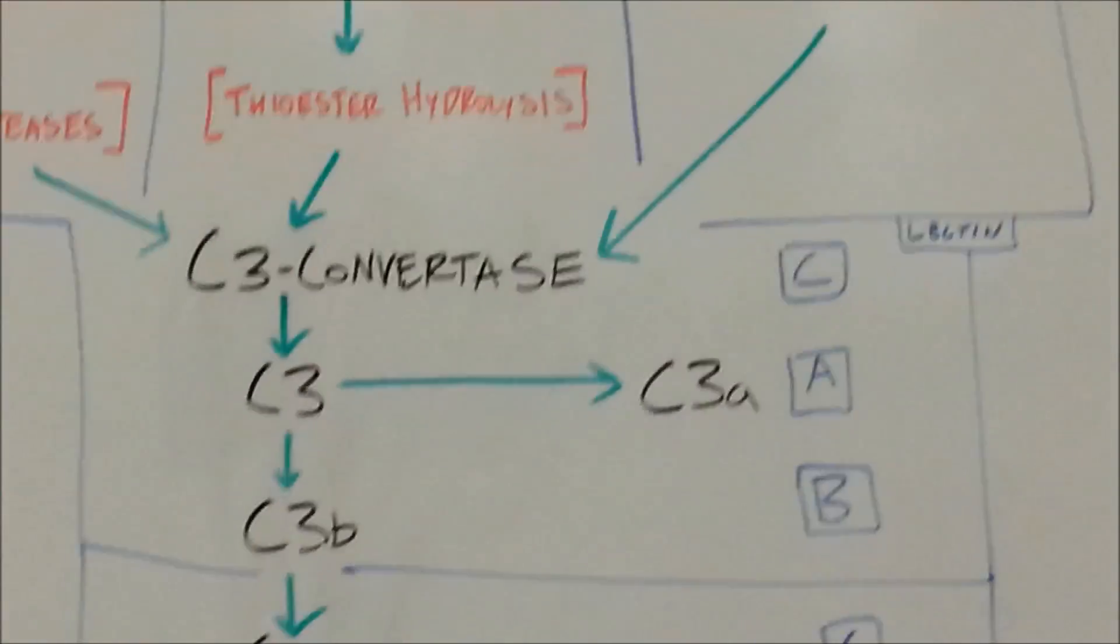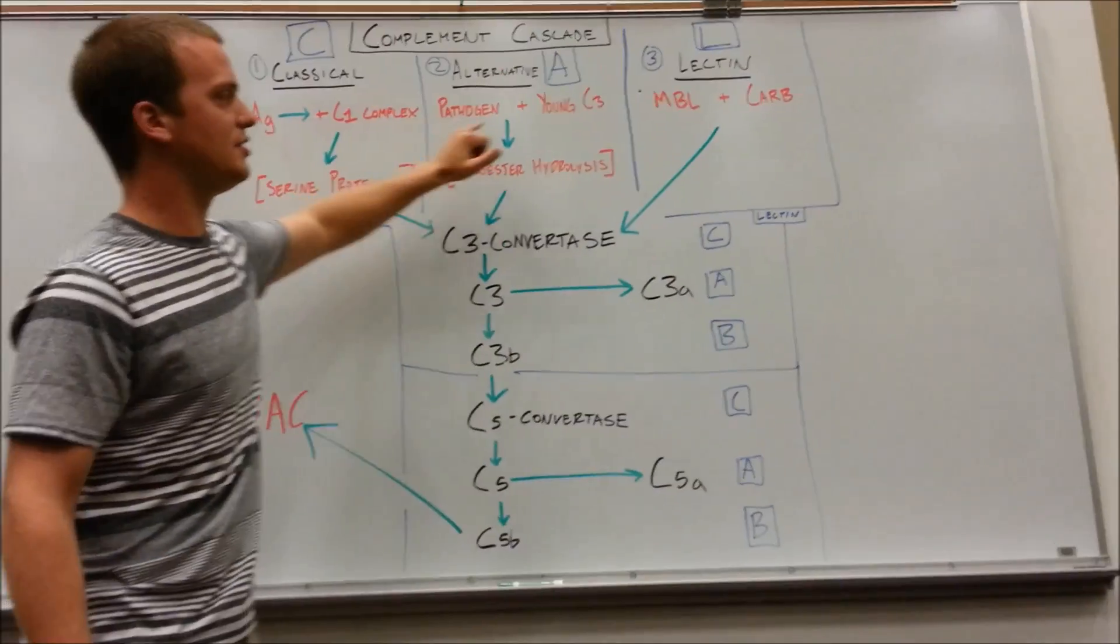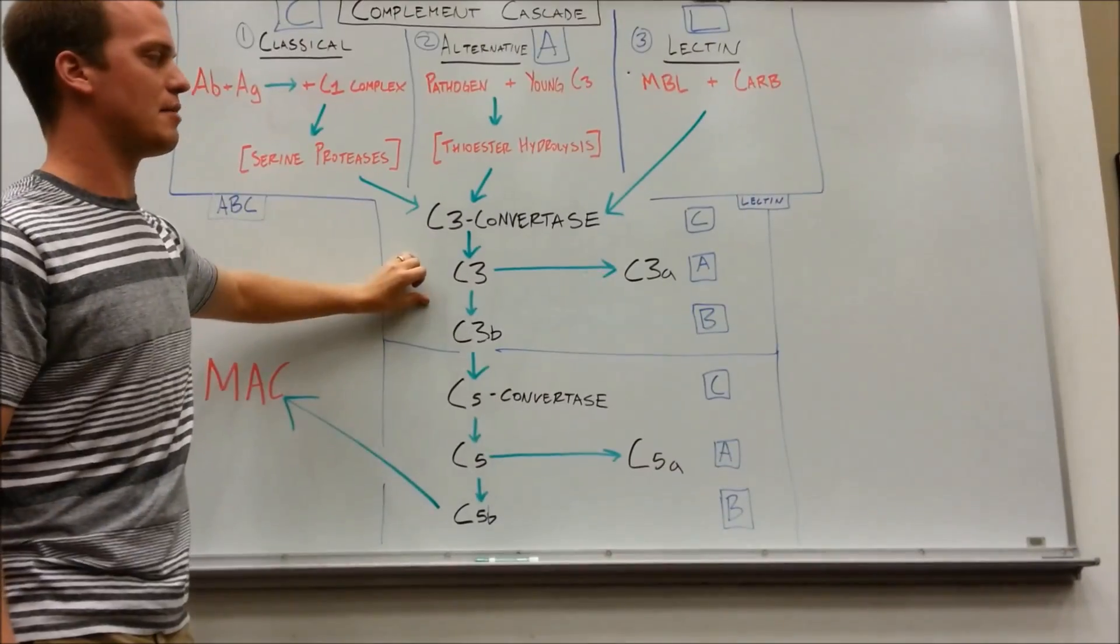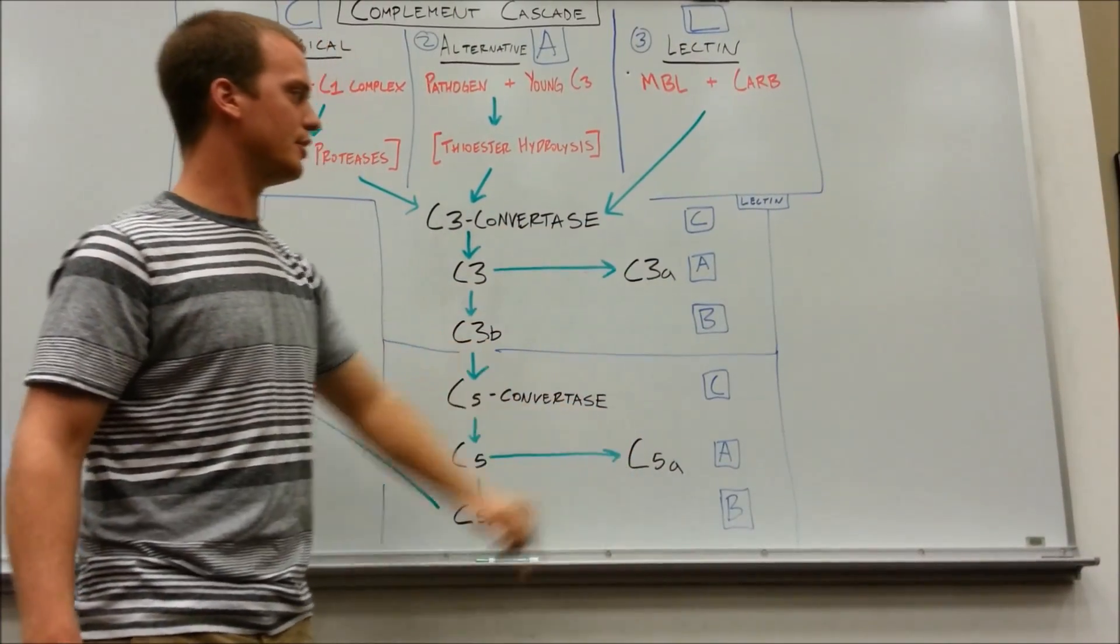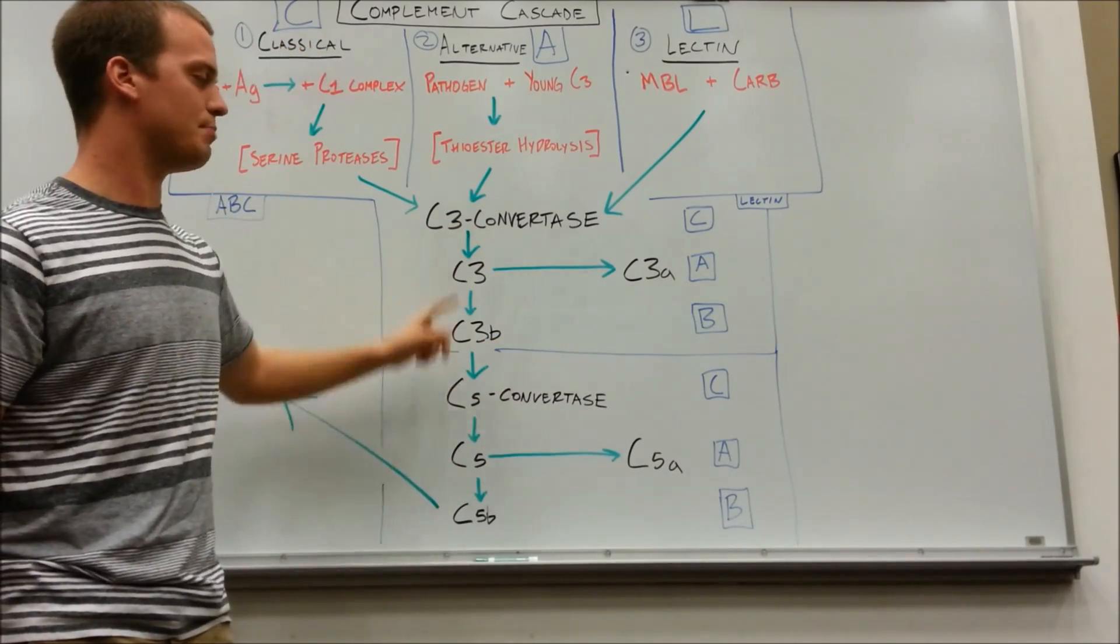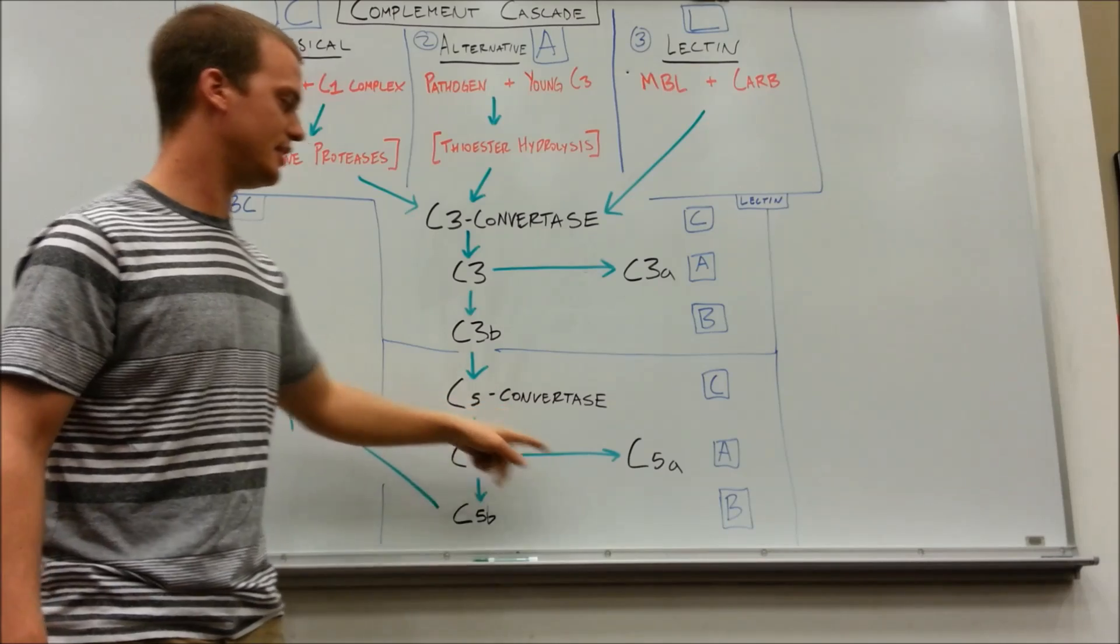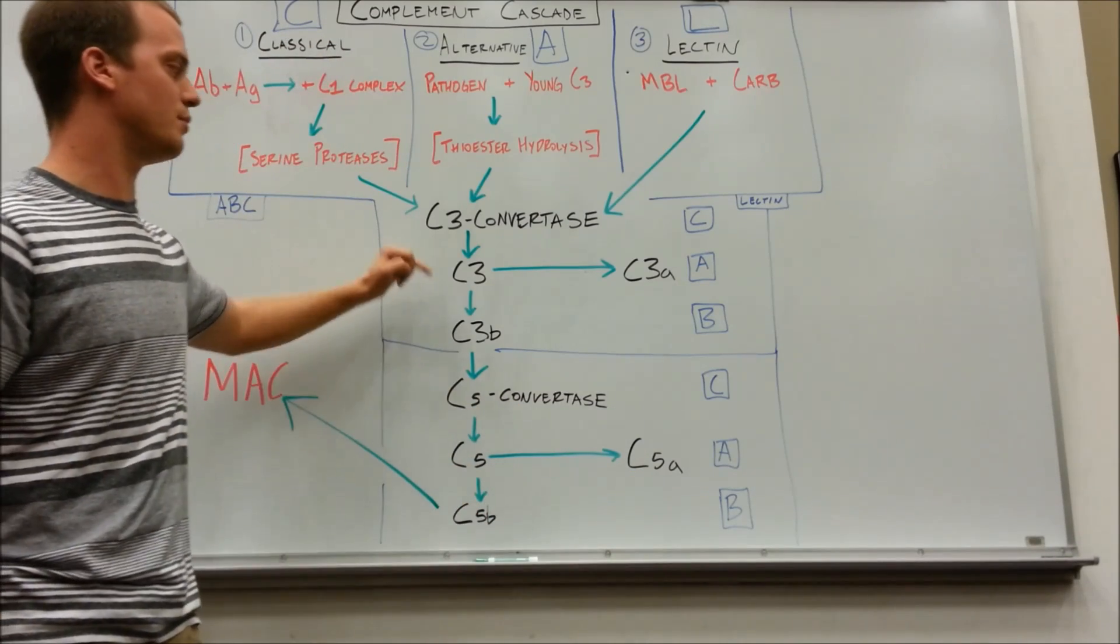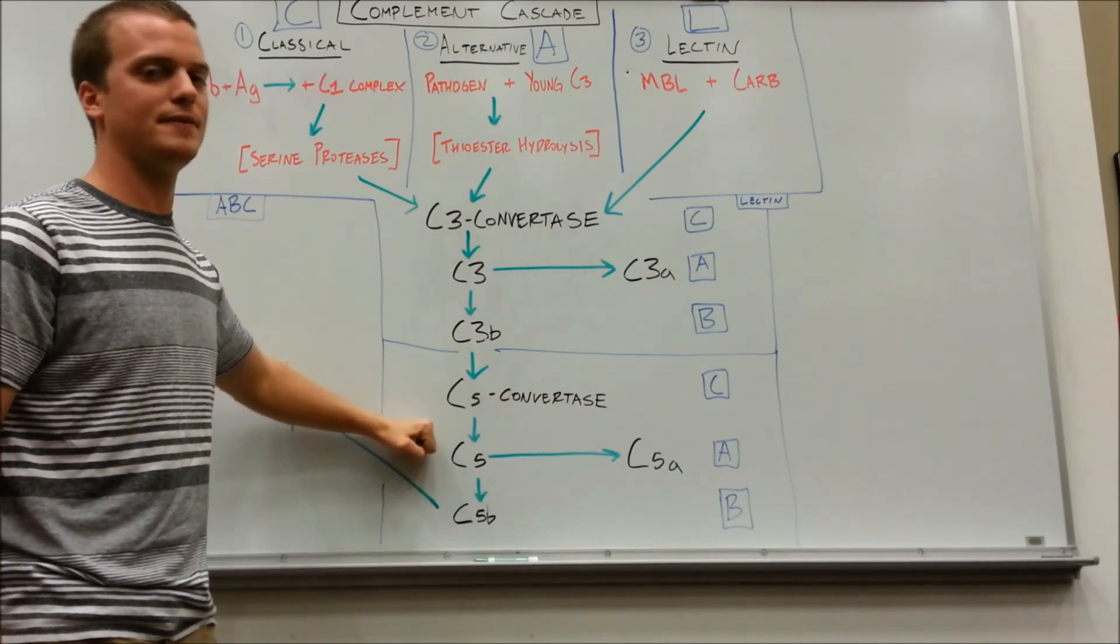Now, we're going to finish this up, go through this common pathway. So again, all three of these unique ones get you here to this common pathway. We had you write up CAB-CAB earlier. That's because C for convertase, A, B. You'll notice that same pattern repeats itself. C, A, B. The only difference is you're dealing with C3 first. You're dealing with C5 second.